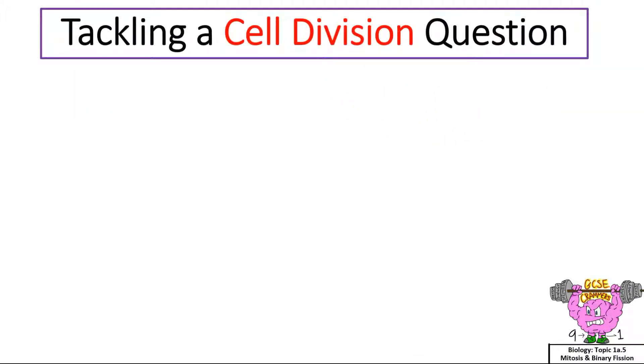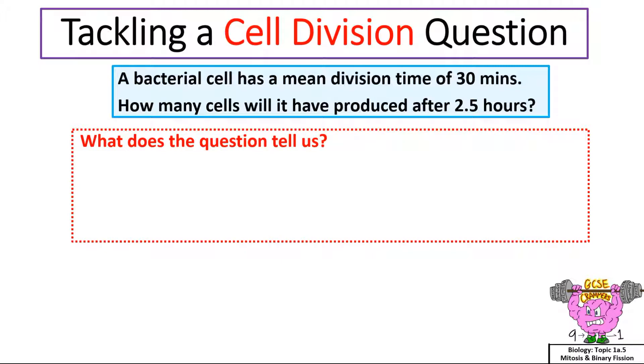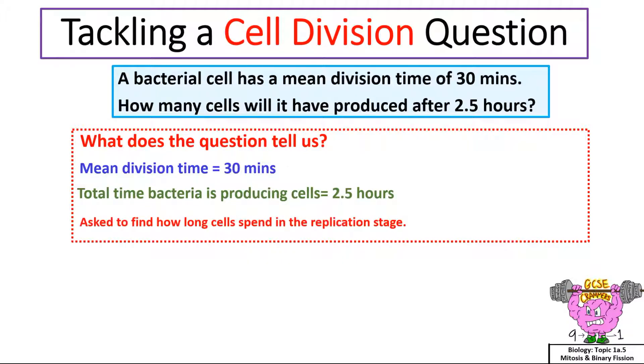Tackling a cell division question. A bacterial cell has a mean division time of 30 minutes. How many cells will it have produced after 2.5 hours? What does the question tell us? Mean division time equals 30 minutes. Total time bacteria is producing cells is 2.5 hours. We are asked to find how long cells spend in the replication stage. First check the times are all in minutes, so we need to convert the hours into minutes by multiplying by 60. Do the maths.